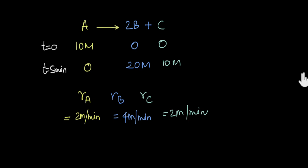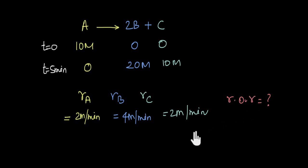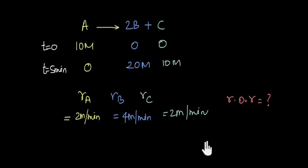Now what will be the rate of reaction in this scenario? Do we say it is 2 molar per minute, or 4 molar per minute, or something else? How do we report the rate of reaction when the rates of disappearance of reactants and appearance of products are not equal? We will explore this question in detail in the next video.